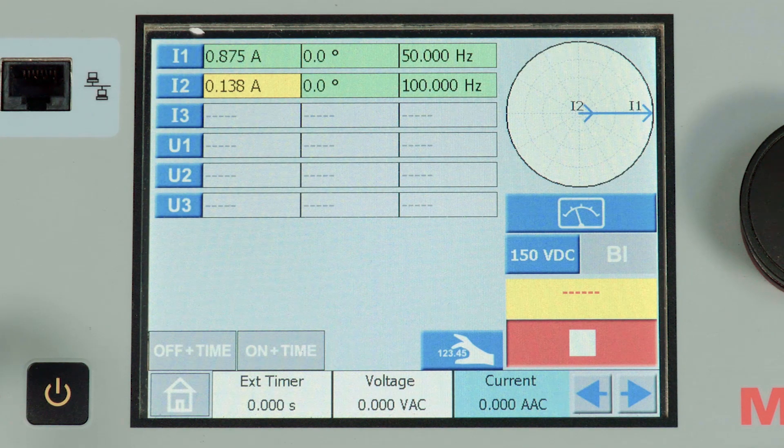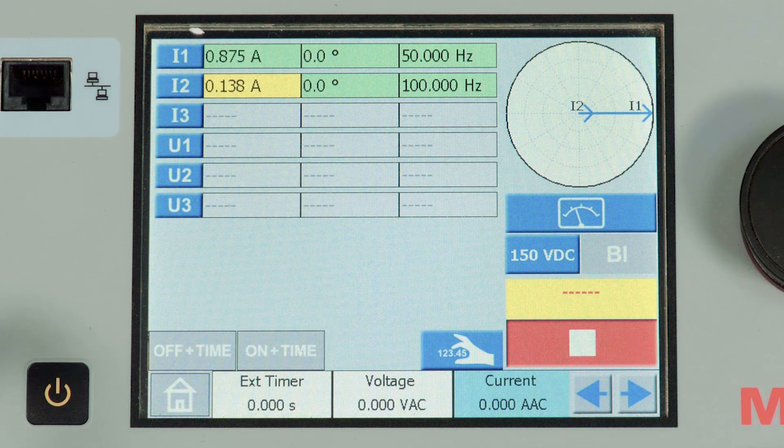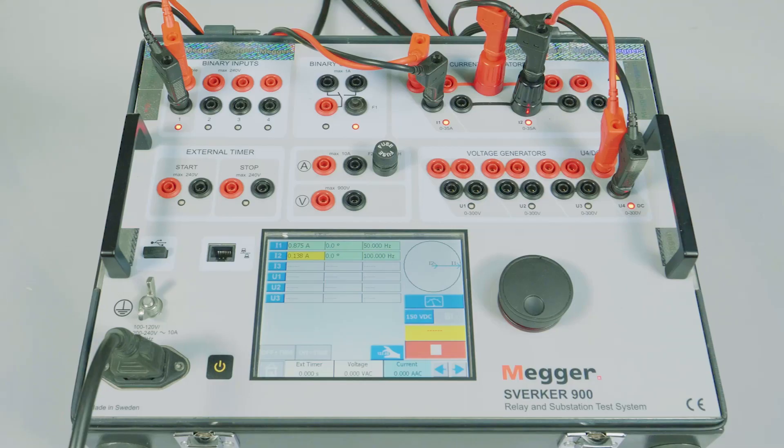By taking a ratio of CT2 divided by CT1, we should get the second harmonic. In any one of the methods, we can identify the second harmonic test.